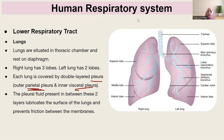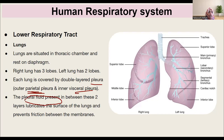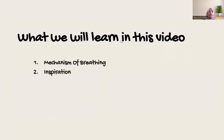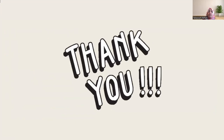Between the two pleural layers there is fluid, which lubricates the surface of the lungs, creating a moist environment that prevents friction between the membranes. That's all for this video — we covered the larynx, trachea, bronchial tree, alveoli, and lungs, which together make up the lower respiratory system. In the next video we will cover the mechanism of breathing — inhalation and exhalation.